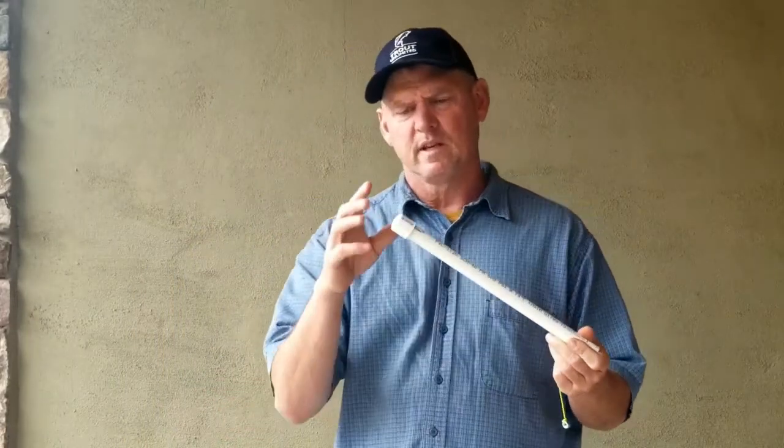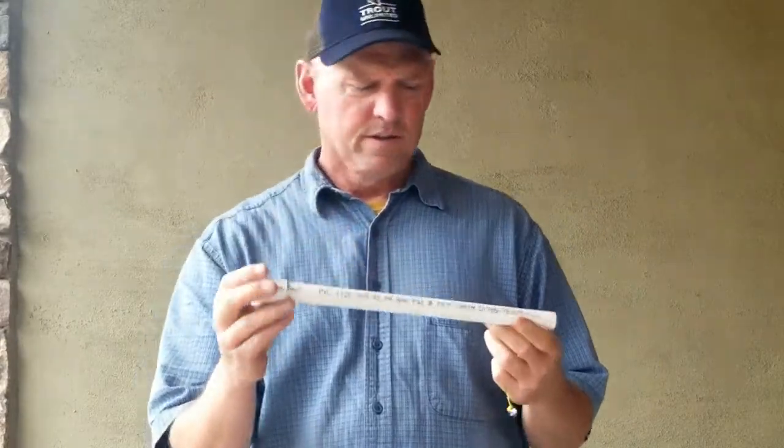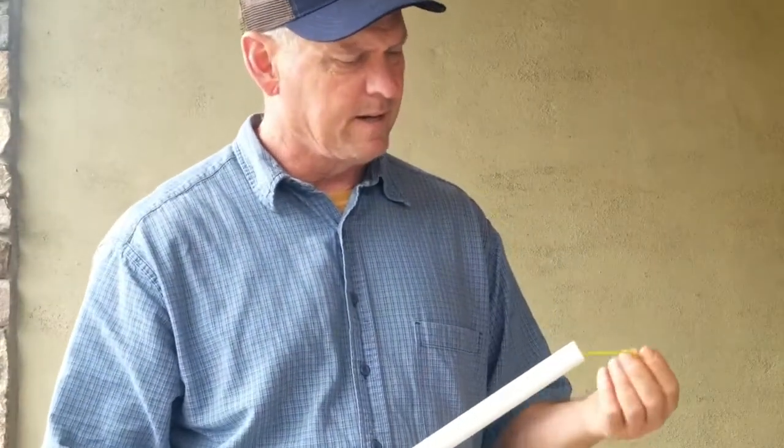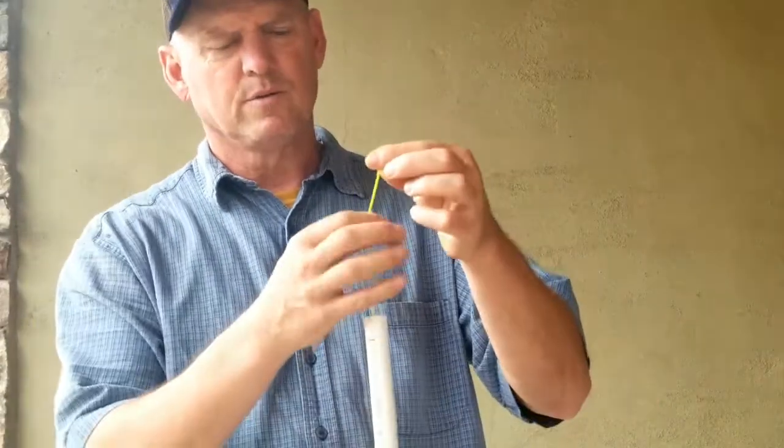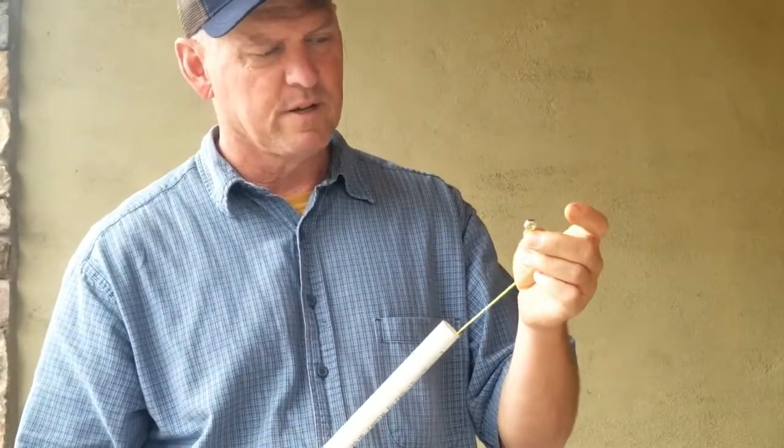All it is is a piece of half-inch PVC. There's a cap on one end. You can make all this for less than about 80 cents. There's a piece of mason twine - you can buy different colors. This one happens to be green.